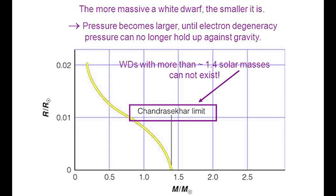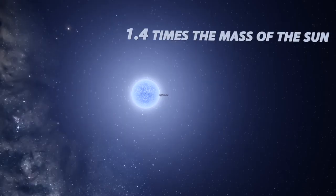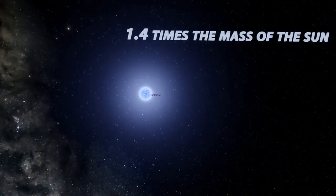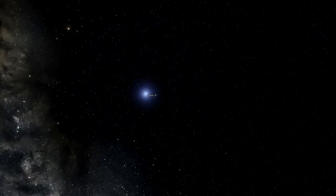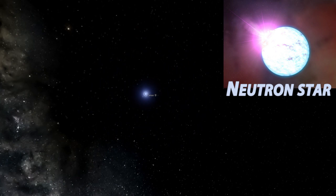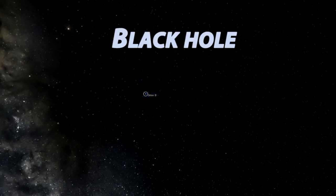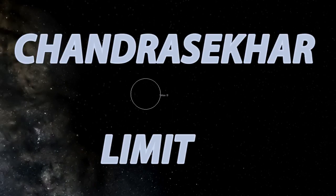But Chandrasekhar found out this electron degeneracy pressure can only hold a star up to 1.4 solar masses. If a white dwarf crosses this limit, it forms what we now know as a neutron star. But if it's even more massive, it will form a black hole. This limit is now called the Chandrasekhar limit.